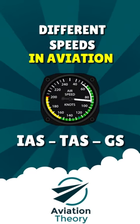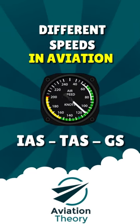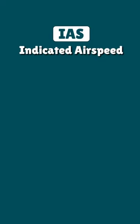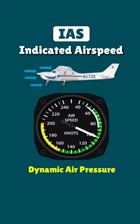Did you know that there are different types of speed used in aviation? The first and most important of all is the indicated airspeed, which is directly related to the pressure exerted by the air against the aircraft during flight, and is useful for establishing aerodynamic and structural limits.